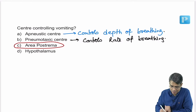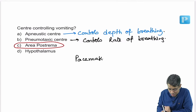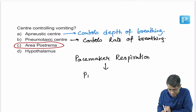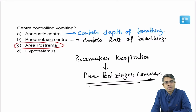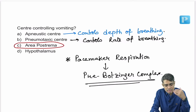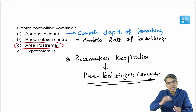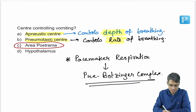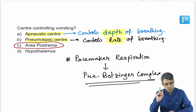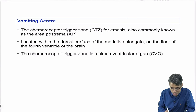If asked which centre is the pacemaker of respiration, the answer is the pre-Bötzinger complex — not DRG. The pre-Bötzinger complex can initiate inspiration and expiration. The apneustic centre controls depth and pneumotactic centre controls rate. For vomiting centre, the answer is area postrema, also known as the chemoreceptor trigger zone (CTZ).